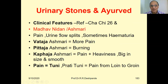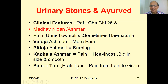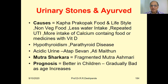There are three types of ashmari: vata ashmari, pitta ashmari, and kapha ashmari — but importantly, all ashmaris are tridoshaja. In vata ashmari, pain is predominant; in pitta ashmari, there is burning in addition to pain; in kapha ashmari, there is less pain but heaviness and the stones are big and smooth. The specific Ayurvedic term for loin-to-groin pain is 'tuni' and 'pratiTuni.'